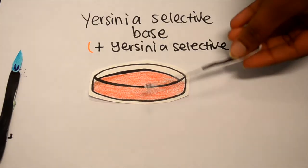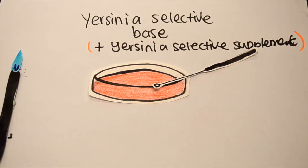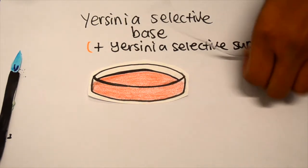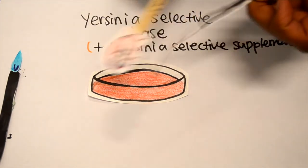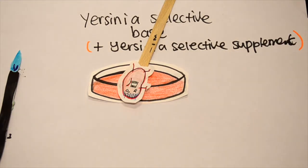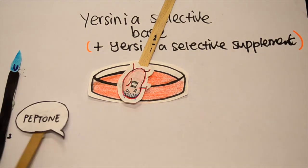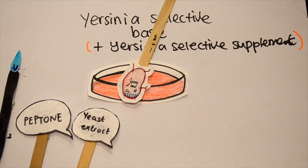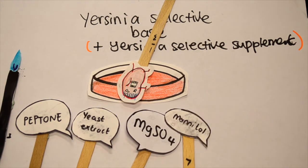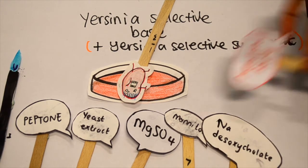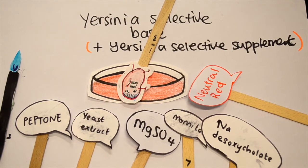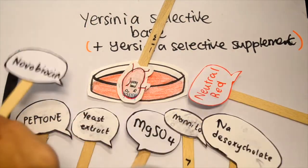Isolation of this organism can be done using Yersinia selective base and Yersinia selective supplement. This medium is made up of special peptone, yeast extract, magnesium sulfate, mannitol which selects for salt-tolerant mannitol-utilizing organisms, sodium deoxycholate which selects for bile-tolerant organisms, and the indicator neutral red. It also contains novobiocin, which is an antibiotic that the organism is resistant to.